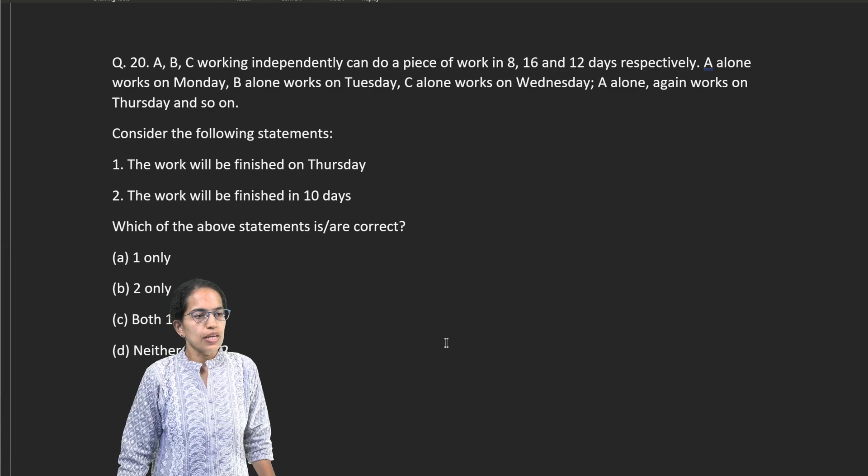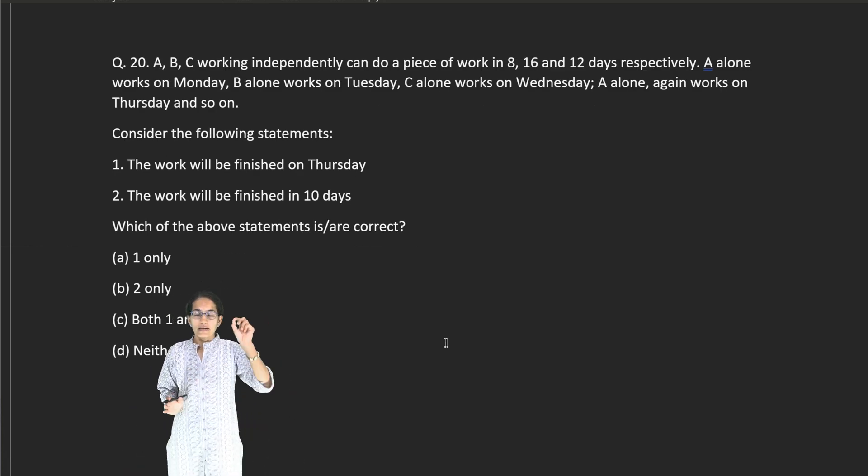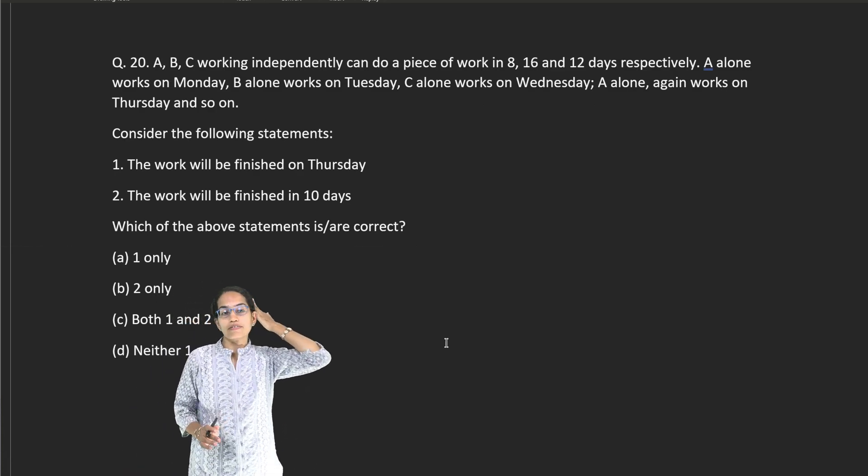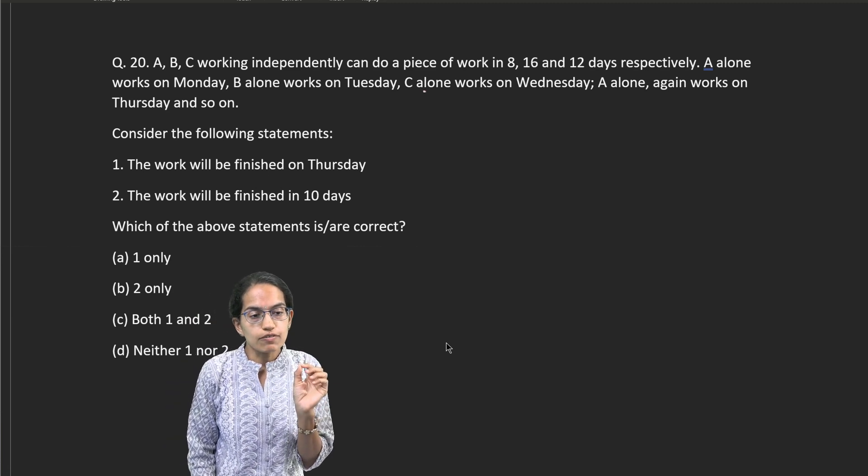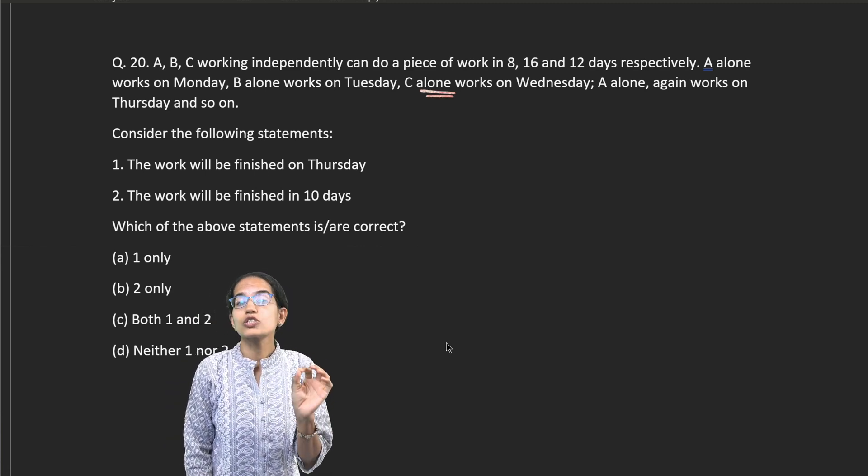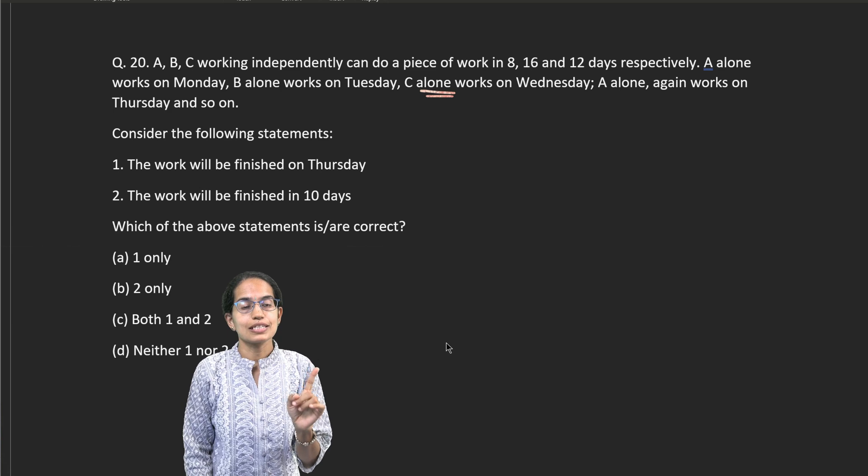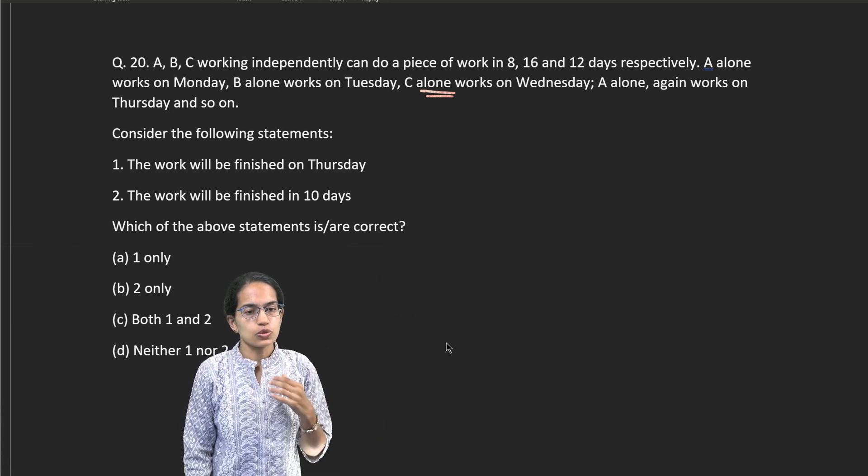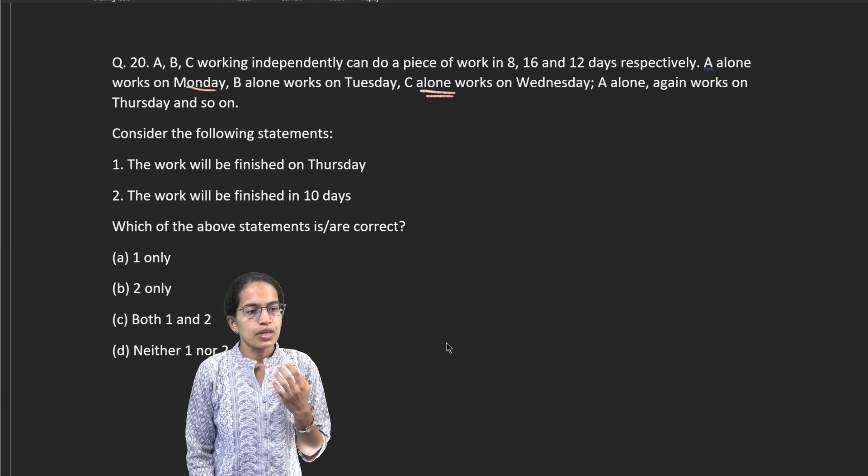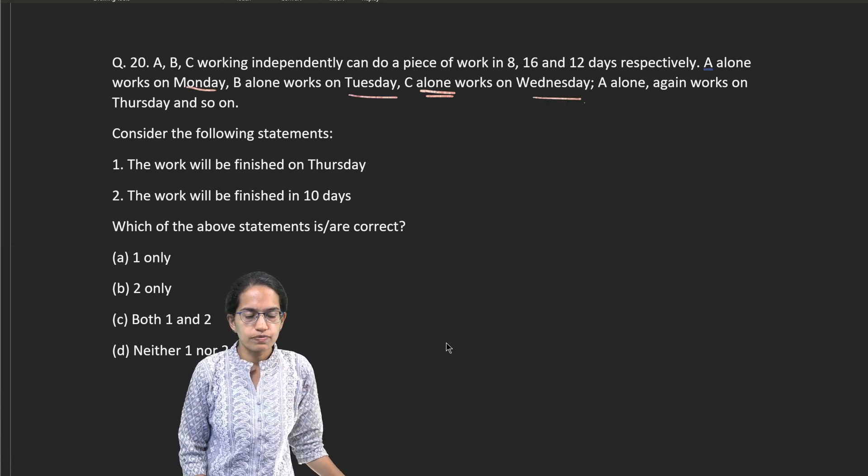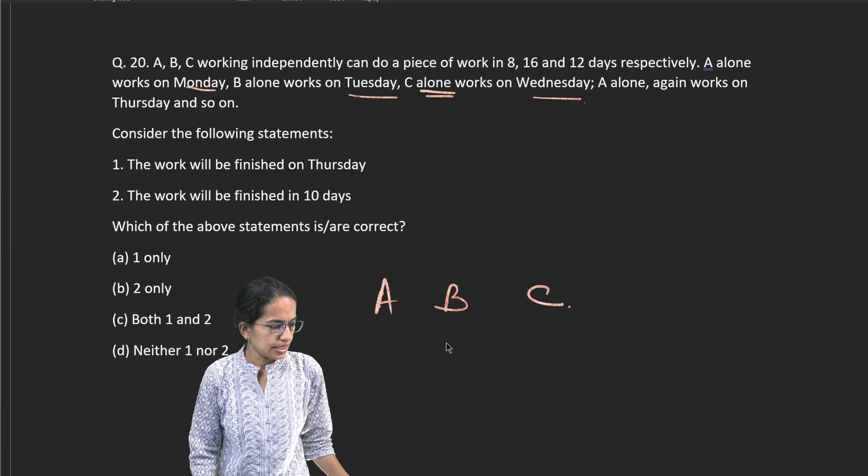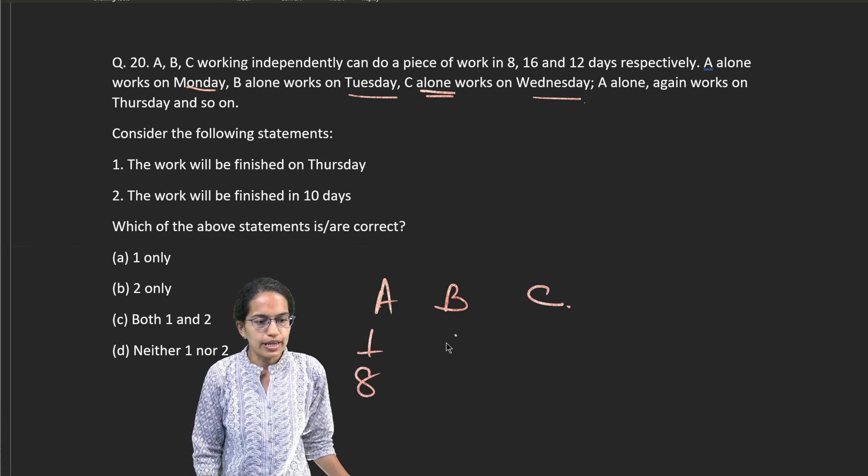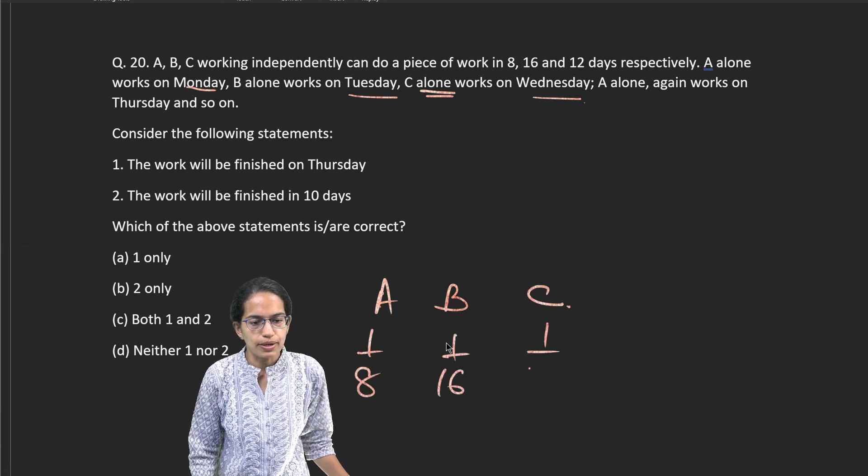Let's move to the next question. Here again, very important to note, a silly mistake that we did was reading the word 'alone.' This is not a combined rate problem. This is a work rate problem where you have to count on individually. So A alone works on Monday, B alone on Tuesday and C alone on Wednesday. So A, B and C, their contribution is 1 by 8, 1 by 16 and 1 by 12.